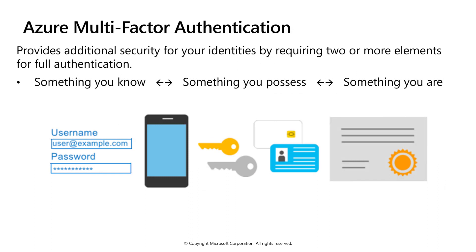Multi-factor authentication provides additional security for your identity by requiring two or more elements to be verified. There are three categories used with Azure multi-factor authentication: something you know, such as a password or the answer to a security question; something you possess, such as a mobile app that receives a notification or a token-generating device; and something you are, typically a biometric property such as a fingerprint or face scan.